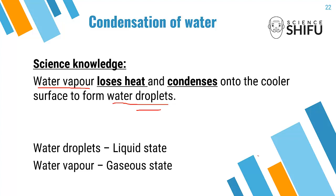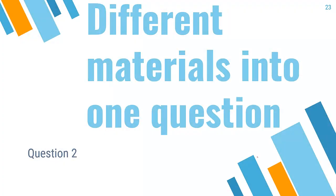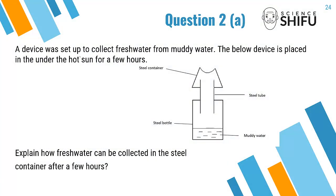You now need to know how to apply these various science knowledge into one single question. Let me show you how the science knowledge learned — including different materials, evaporation, and condensation — is applied to Question 2. A device was set up to collect fresh water from muddy water, placed under the hot sun for a few hours. Can you explain how fresh water can be collected in the steel container after a few hours?